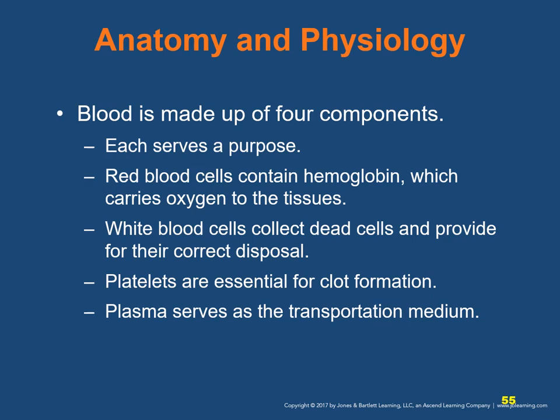Blood transports oxygen and carbon dioxide into and out of tissues. Red blood cells (erythrocytes) contain hemoglobin, which carries oxygen to the tissues, and make up 42–47% of blood volume. White blood cells (leukocytes) make up 0.1–0.2% of blood cell volume and respond to infections and dead cell disposal. Platelets make up 4–7% of blood cell volume, respond to skin or blood vessel damage, and assist in clot formation. Plasma serves as the transportation medium for blood components, proteins, and minerals.